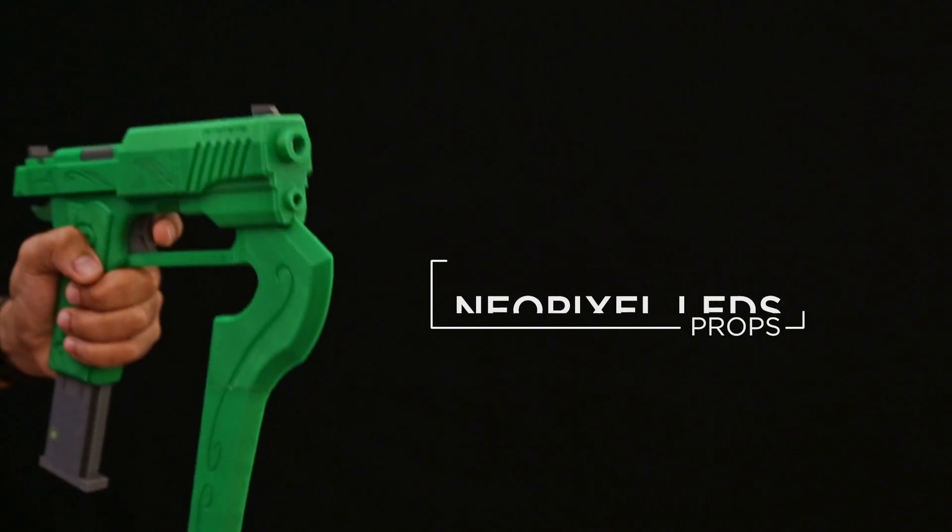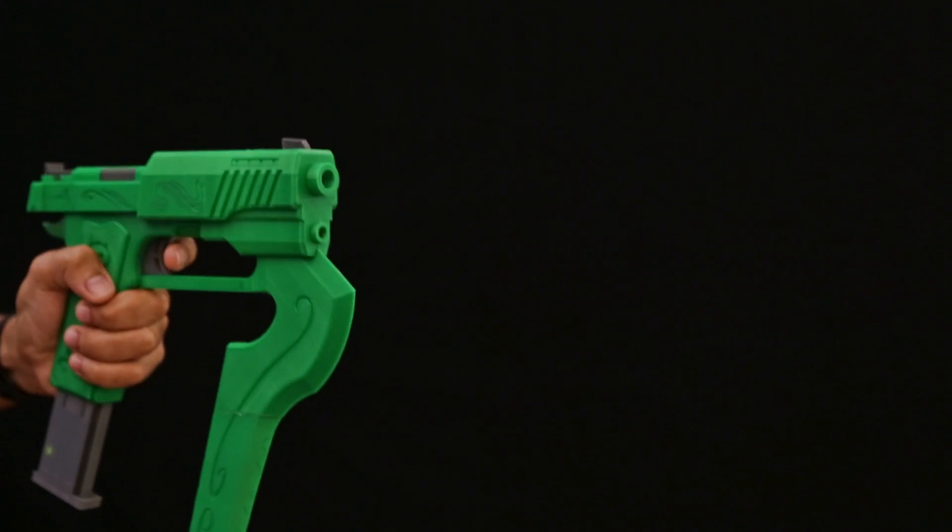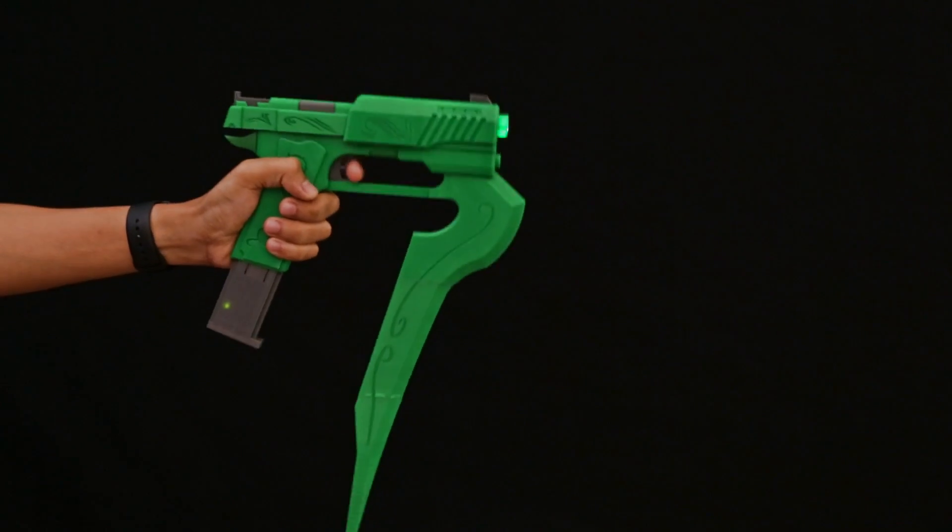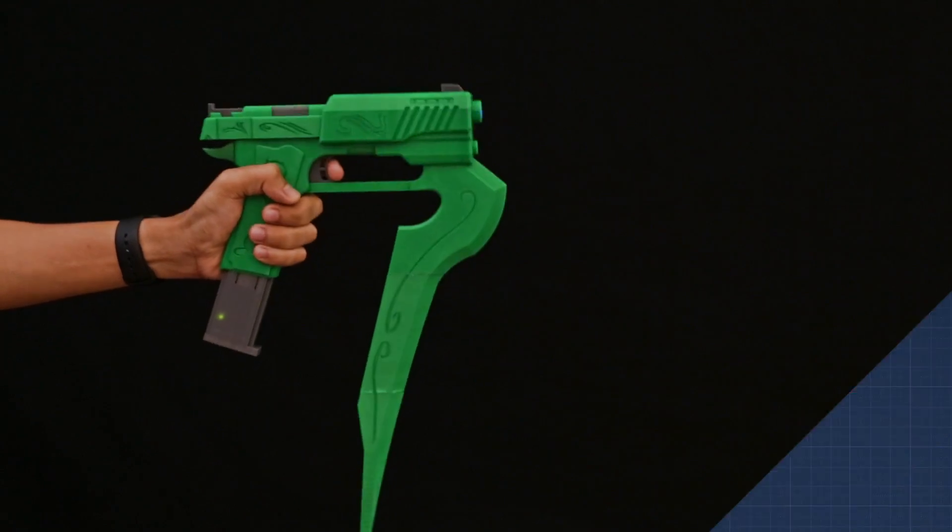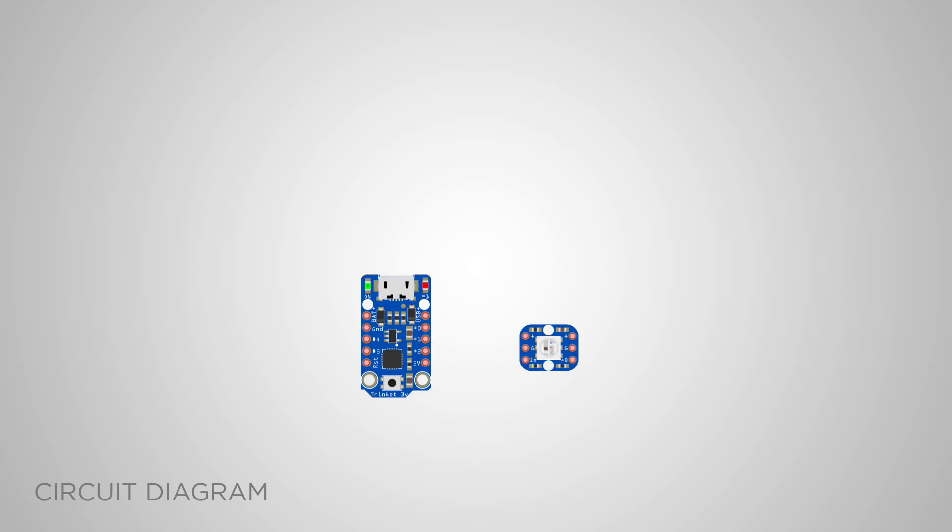The electronics that I use in this project are great for cosplay weapons, or really anything that needs to flash when you press a button. For this project, we'll use an Adafruit trinket, a NeoPixel, a push button, JST breakout, and battery.